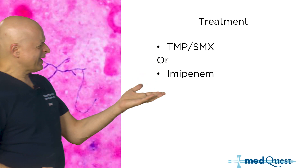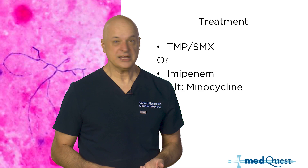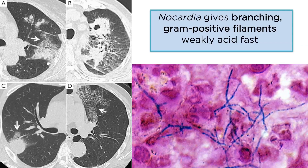Trimethoprim-sulfa or carbapenem? Or minocycline — which gets rid of your life-threatening opportunistic infection of Nocardia and also cleans up your acne. So not only are you not going to die of this opportunistic infection, you're going to have beautiful clear skin with minocycline — a branching, gram-positive, filamentous organism that's weakly acid-fast.